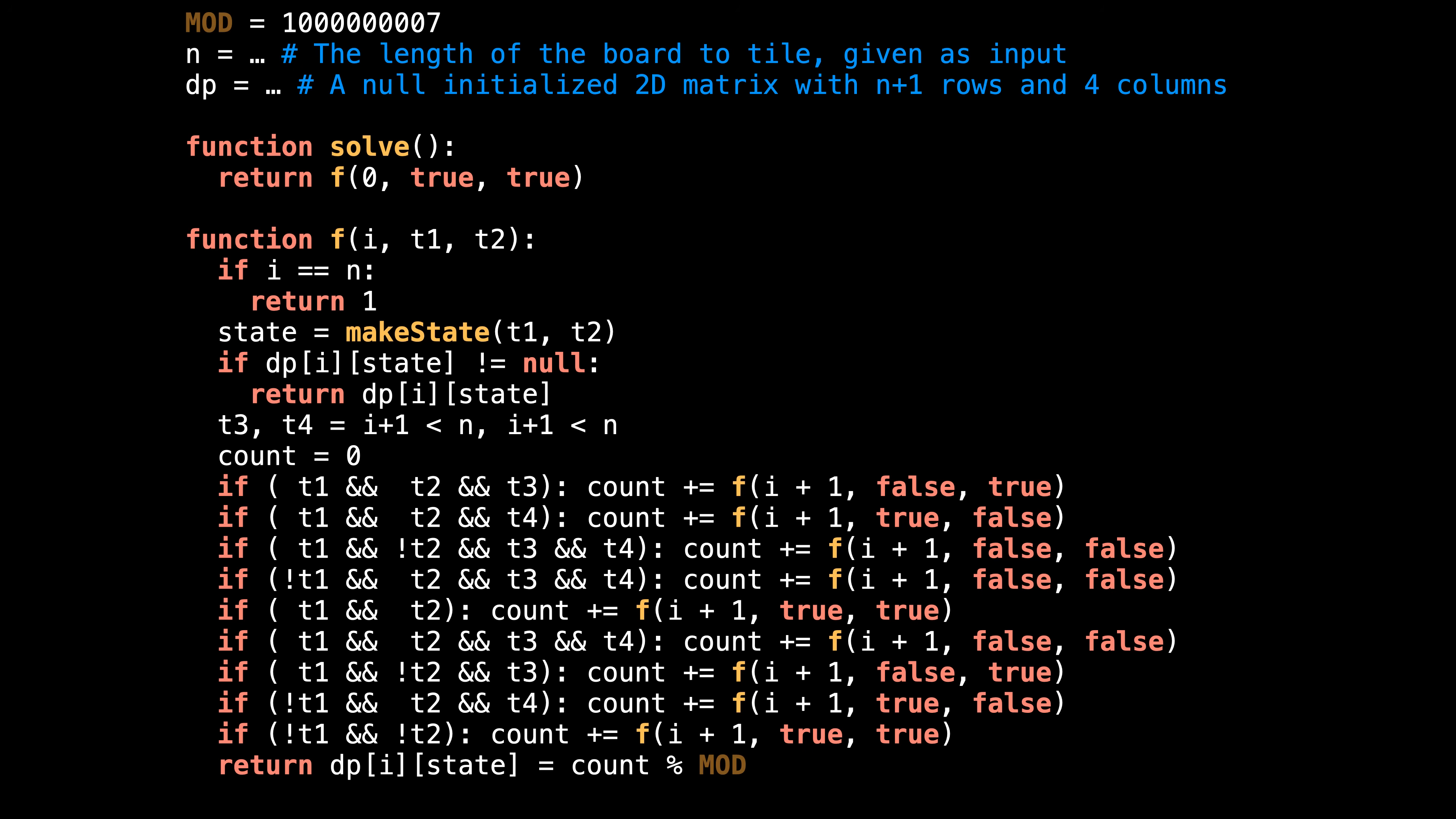Alright, now that we understand the main idea behind tiling the board, let's have a look at some pseudocode. Don't be intimidated by the looks of the code. It's actually quite simple. I'll walk you through it. First, I define a few variables in the outer scope. The first is the mod value, which is 1 billion and seven. After the mod, there is n, the length of the board to tile, this is given as input. And after that, there's the DP table, which has n+1 rows and four columns for each of our column states. Assume that the table is initially filled with null values.